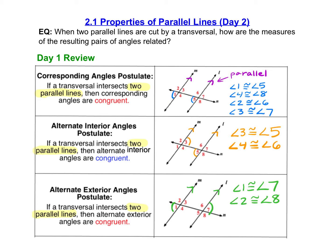Let's start by reviewing the postulates and theorems we discussed at the end of day one. We have the corresponding angles postulate, which tells us if a transversal intersects two parallel lines, then the corresponding angles are congruent. Remember that these postulates and theorems only apply if the two lines are parallel — you either need to be told they're parallel, or given a marking that indicates the lines are parallel.